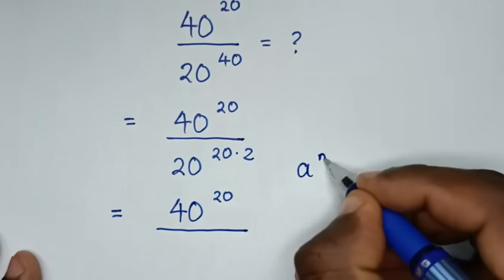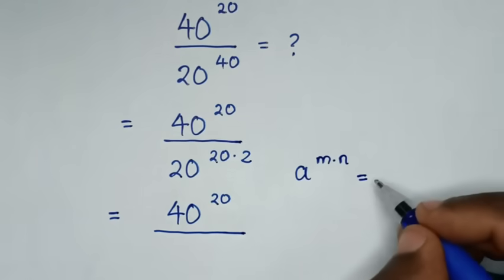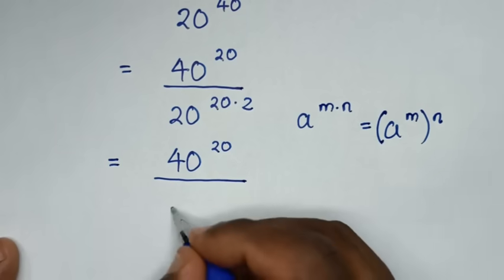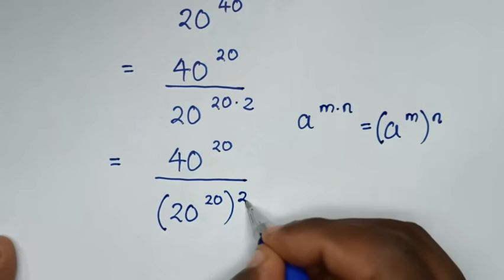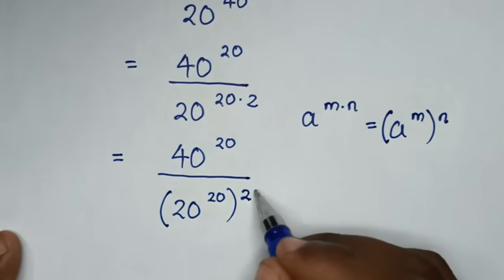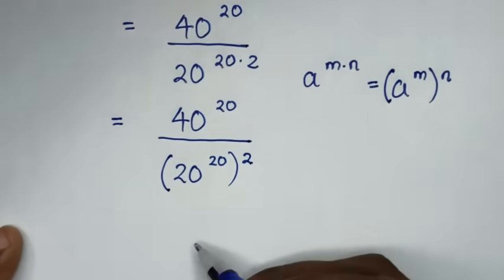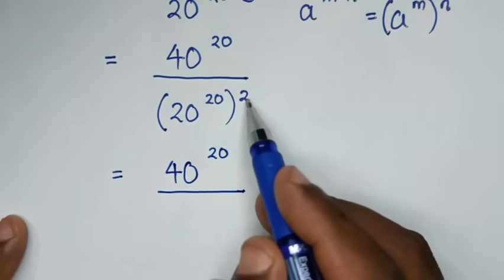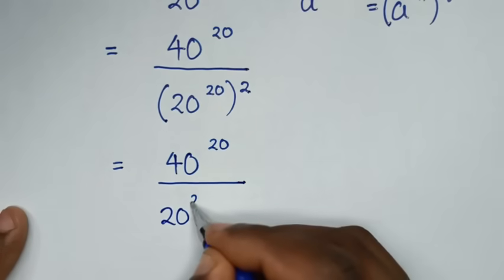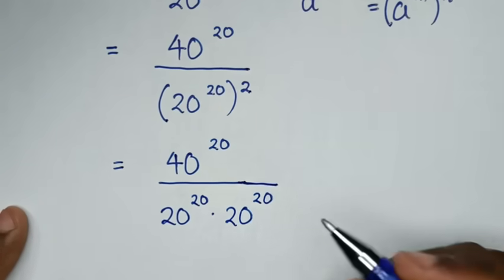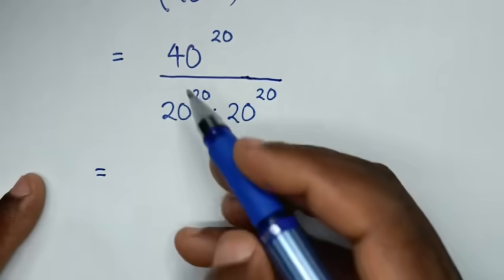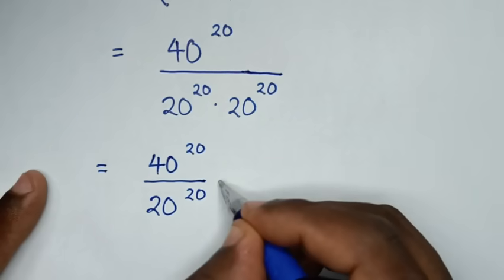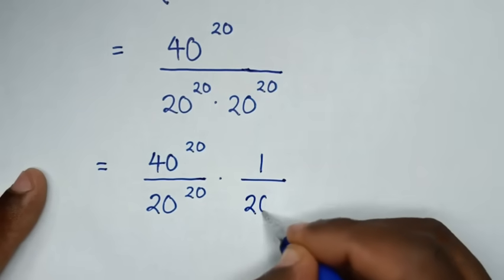This part here is in the form of a power of m times n, which is equal to a power of m inside the bracket, power of n outside the bracket. So, it will be 20 power of 20 inside the bracket, power of 2 outside the bracket. We put this power of 2 outside the bracket because it is a square, so we can multiply this times itself. So, it will be equal to 40 power of 20, then over 20 power of 20 squared, which is 20 power of 20 times 20 power of 20.